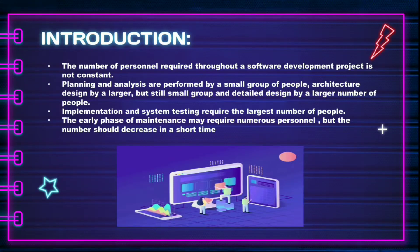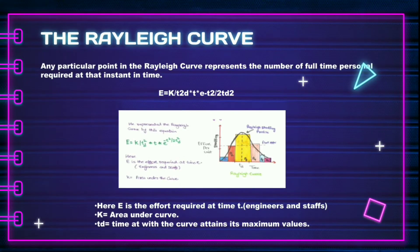The early phase of maintenance may require numerous personnel, but the number should decrease in a short time. Regarding the Rayleigh curve, any particular point on it represents the number of full-time personnel required at that instant in time. The equation of the Rayleigh curve uses E as the effort required at time t, K as the area under the curve, and td as the time at which the curve attains its maximum value.